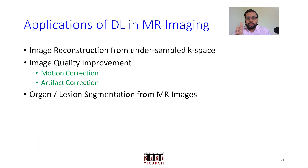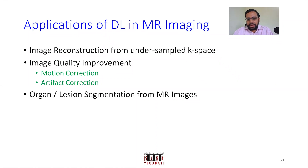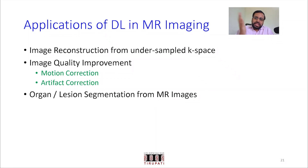Now we move to applications of deep learning specifically in MRI imaging. One important problem is image reconstruction from undersampled k-space. The motivation for undersampling k-space in MRI should already be clear: acquisition time is very high, and even if you are ready to acquire for a long time, there could be subject movement causing motion artifacts. So you would prefer acquiring with minimum samples — can you reconstruct back the original signal? This is a very important problem in MRI.